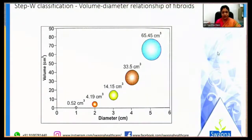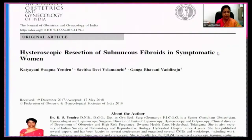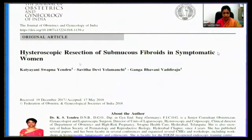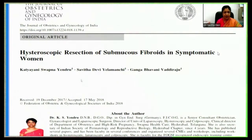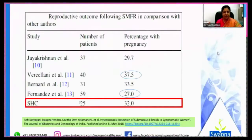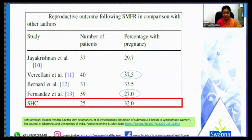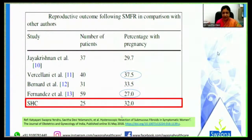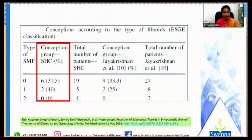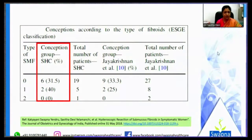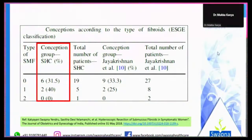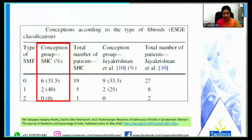With larger submucous myomas, bleeding may be more and you may not be able to complete resection in a single sitting. We published results in the Journal of Obstetrics and Gynaecology of India on hysteroscopic resection of submucous fibroids. Conception rates in the literature range from 27% to 37%; our rate was 32%. Conception rates are lower with submucous fibroids compared to intramural or subserous fibroids, with type 2 showing the maximum conceptions.